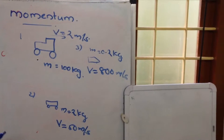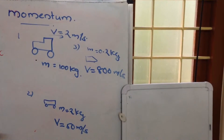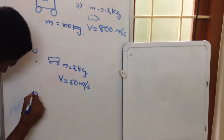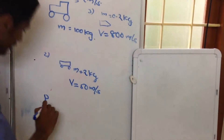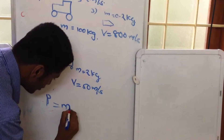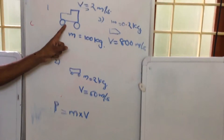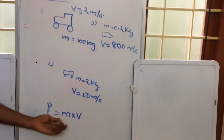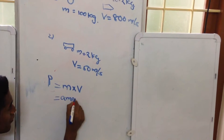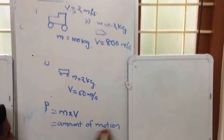So how do we define the amount of motion within an object? We accomplish this by using a quantity called momentum, denoted p, which is equal to m into v. So when we multiply the mass of a particular object with its velocity, we get momentum, and that is the amount of motion in a body.